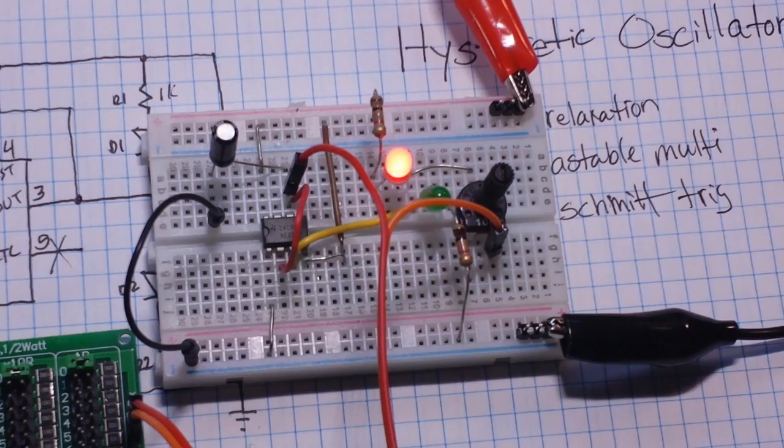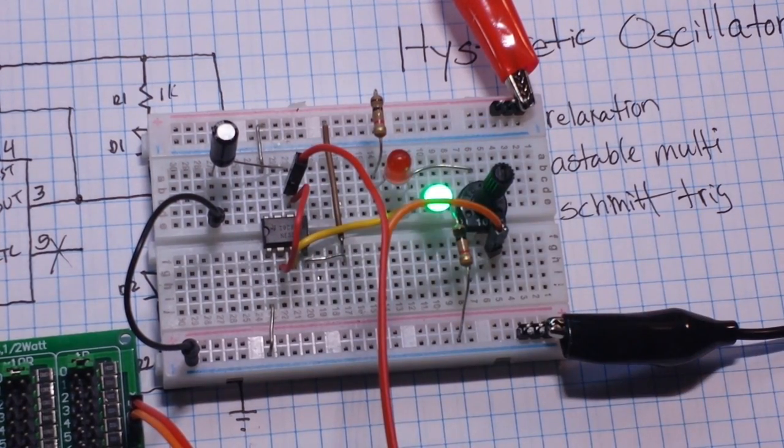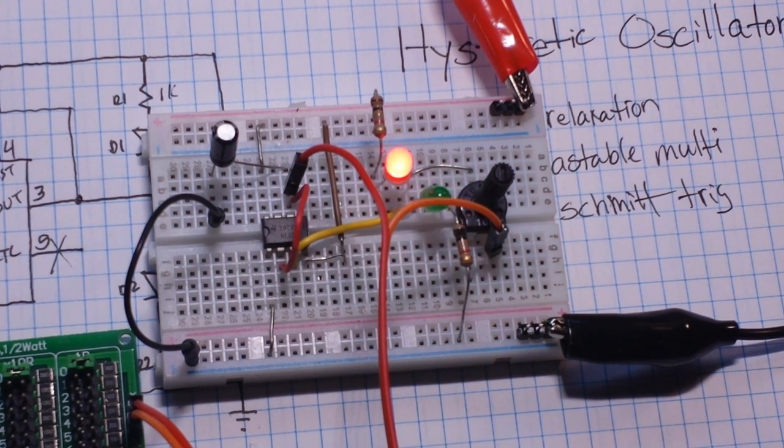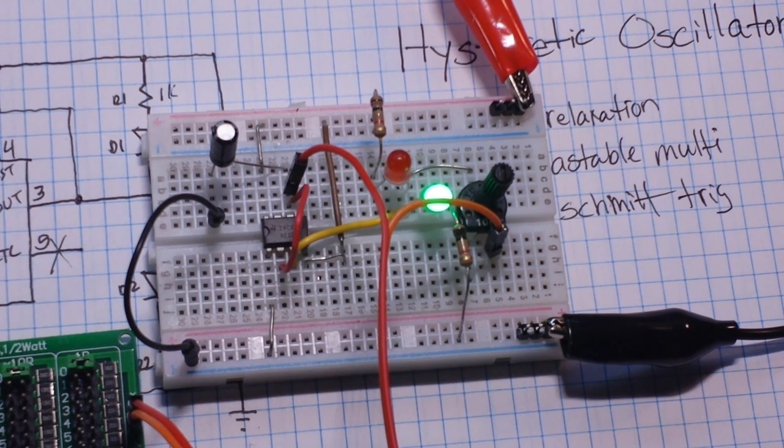But if you really want to change the frequency, what you can do is simply swap out the 10 microfarad capacitor. If you want it slower, like here's a 100 microfarad capacitor—it'll be ten times slower. Or you can put in a 1 microfarad capacitor and it will be ten times faster. So I guess that's the basics of it.